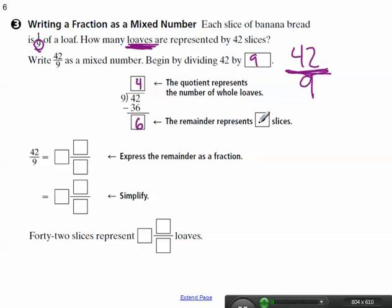So that's going to be a remainder of 6. So the remainder represents how many leftover slices? 6 leftover slices. So what's my whole number going to be? 4. So there are 4 whole loaves.